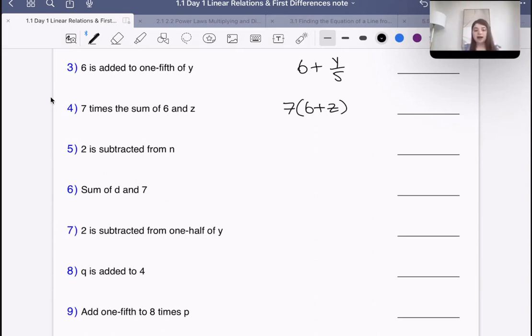Two is subtracted from n. What does that mean? Subtracted from n means we start with n and then two is subtracted from n, so we do n minus two.